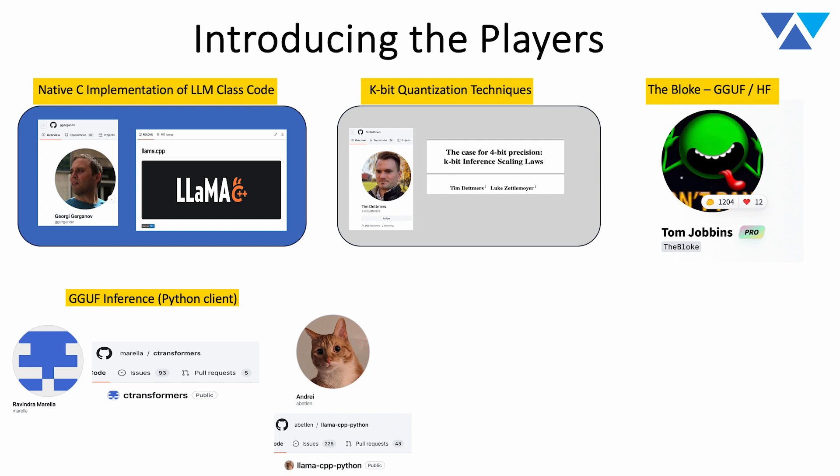There are two leading Python client libraries: one is the ctransformers library by Ravindra Morella, and the other is the llama-cpp-python library by Andrei Betlen. Both are really powerful ways to consume and run inference on a model that's gone through this GGUF transformation process.